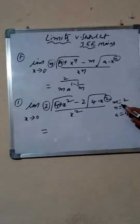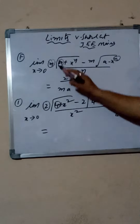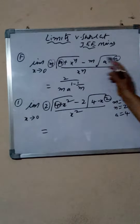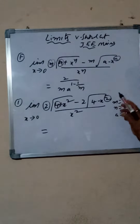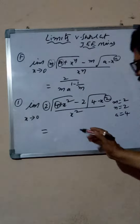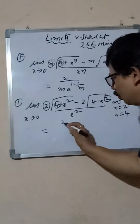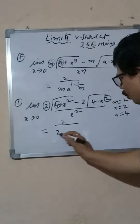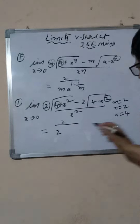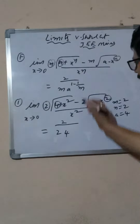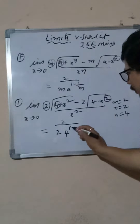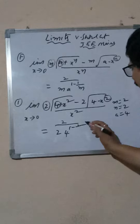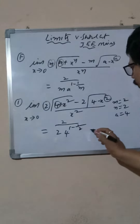Simple logic here. M is equal to 2, A is equal to 4. Just substitute in the formula: 2 by M — which is 2 — next A means 4, and 1 minus 1 by M means 1 minus 1 by 2.